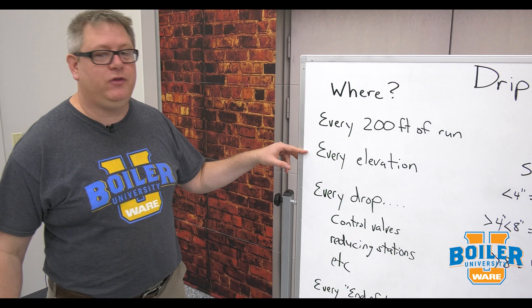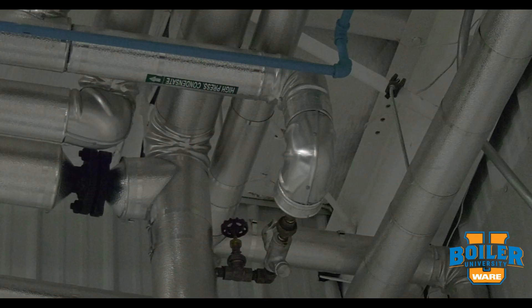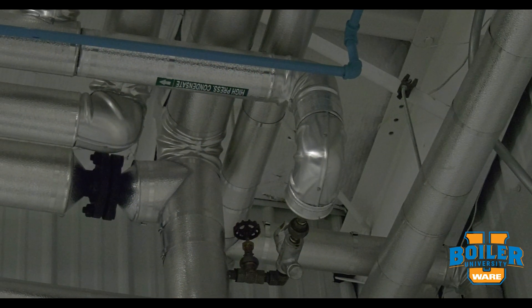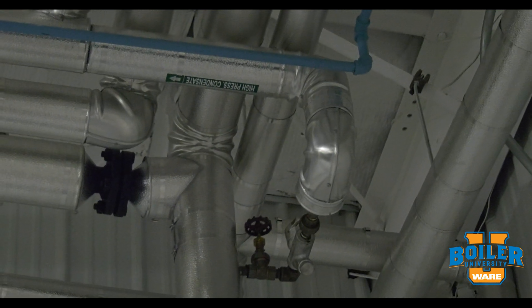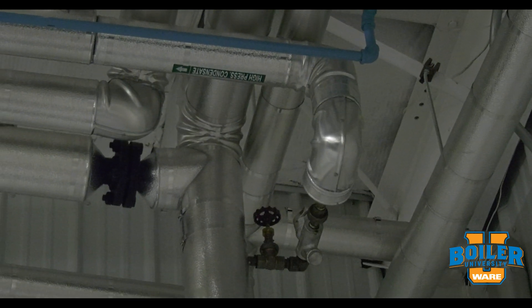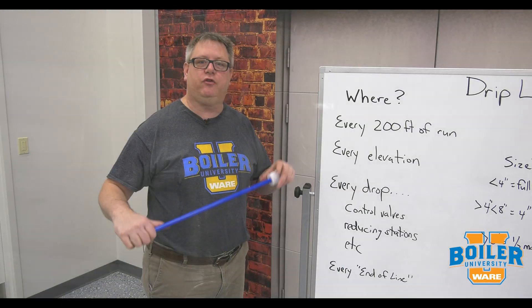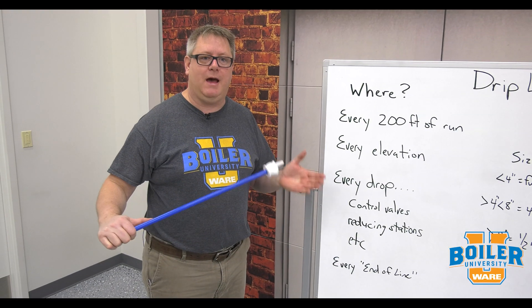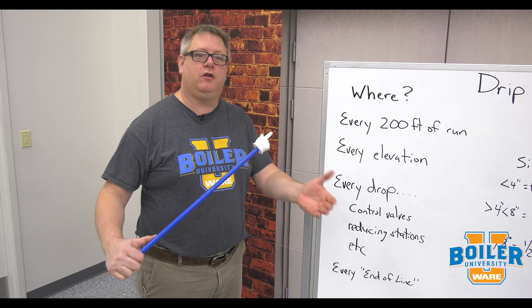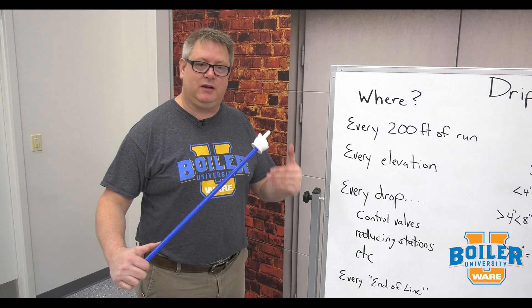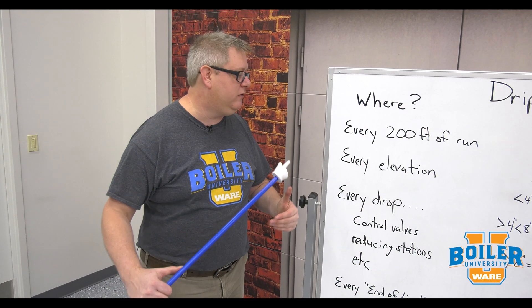We need to put a drip leg every time the steam line elevates, because condensate doesn't want to go up with the steam. By putting a drip leg there to capture it, it's a great point to collect and clear that condensate.